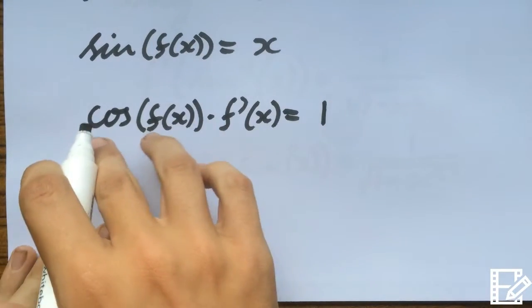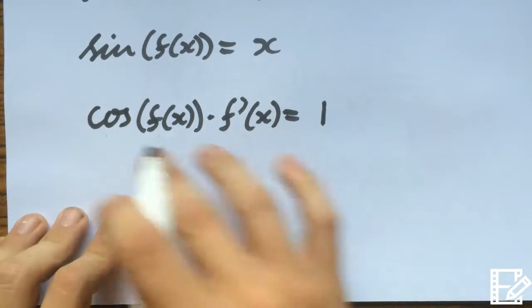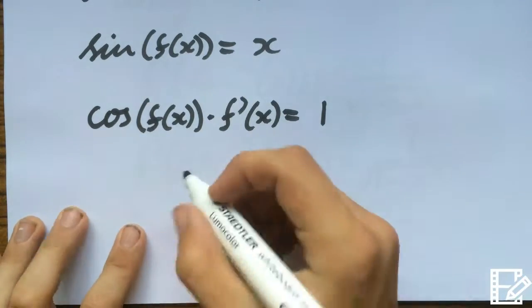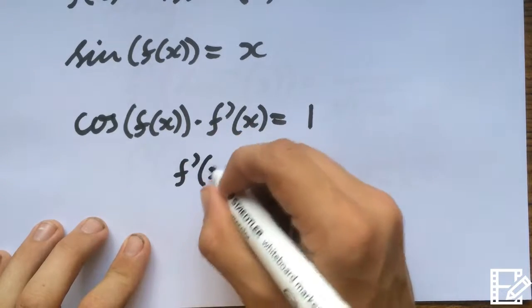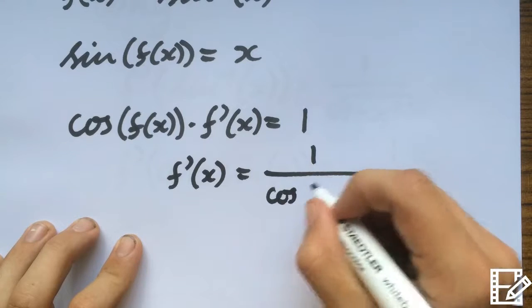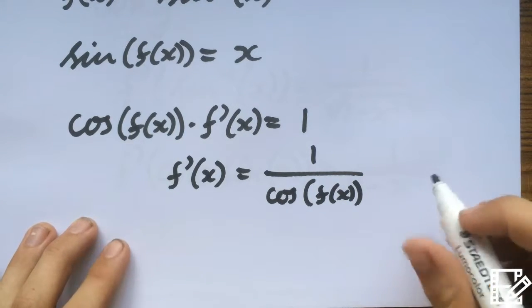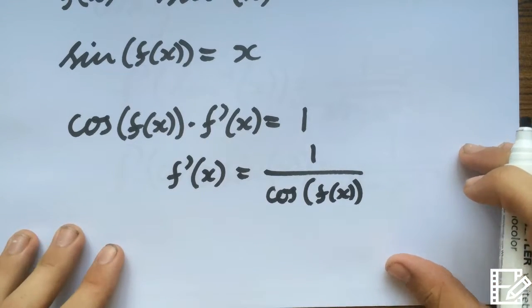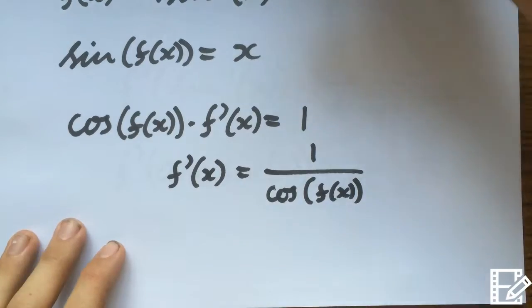Now what I'm going to do is I'm going to take the cos(f(x)) and divide it on either side, which will bring it on this side. So we'll have f'(x) equals 1 over cos(f(x)). Now, cos of f(x), what can we do with that?